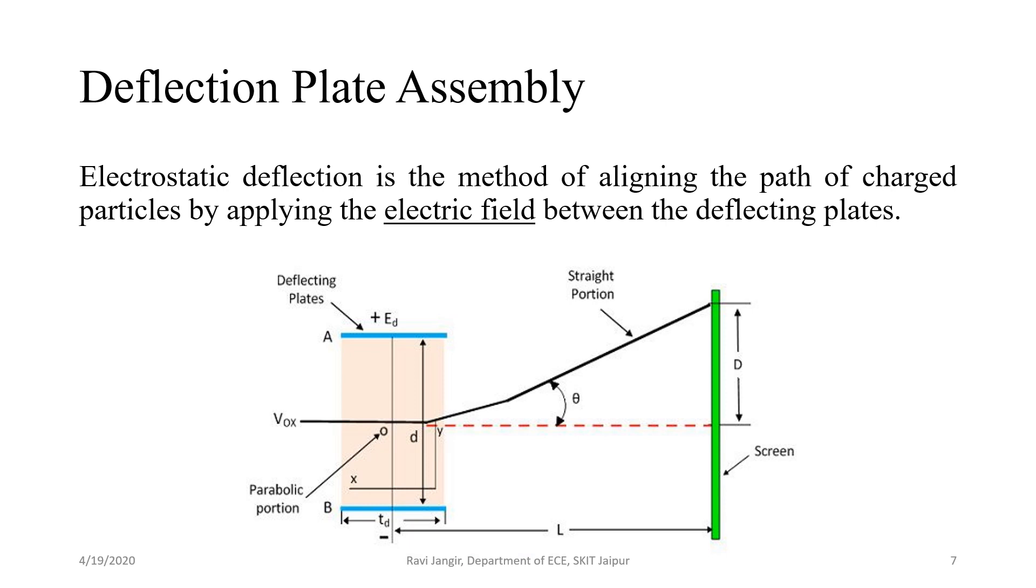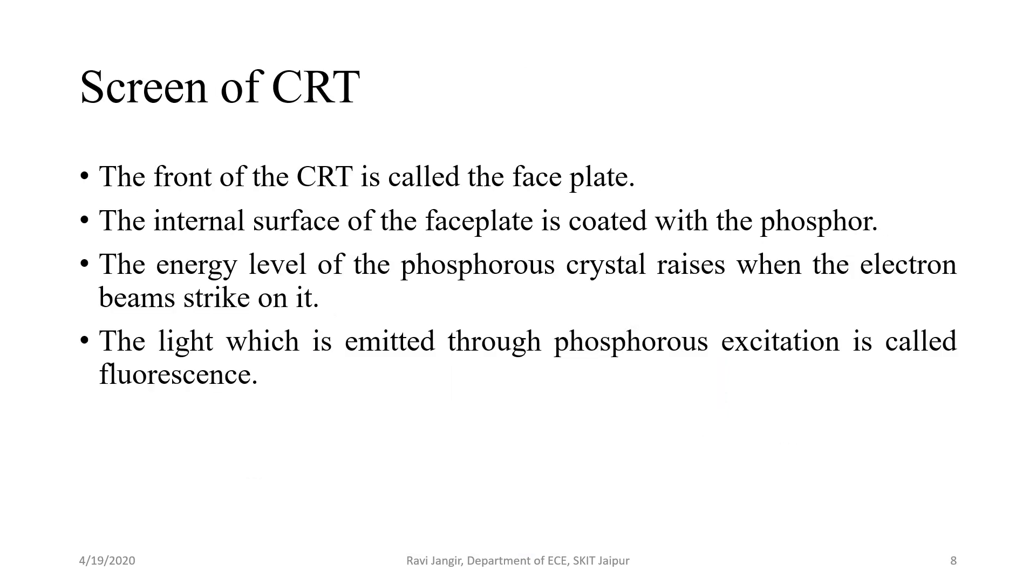Now the last part of CRT is Phosphor screen on which we display our 2D signals. The front of the CRT is called the faceplate. The faceplate of the CRT is made up of entirely fiber optics which has special characteristics. The internal surface of the faceplate is coated with Phosphor. The Phosphor converts electrical energy into light energy. The energy level of Phosphor crystal rises when the electron beam strikes on it. This phenomenon is called cathode luminescence. The light which is emitted through Phosphor excitation is called fluorescence.